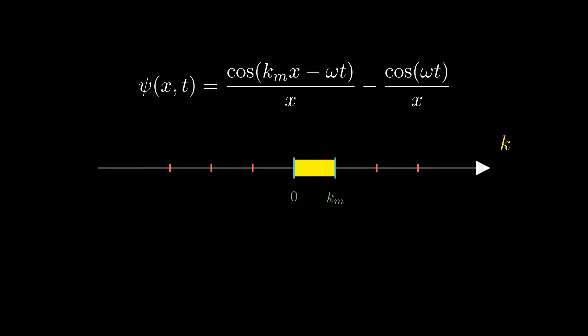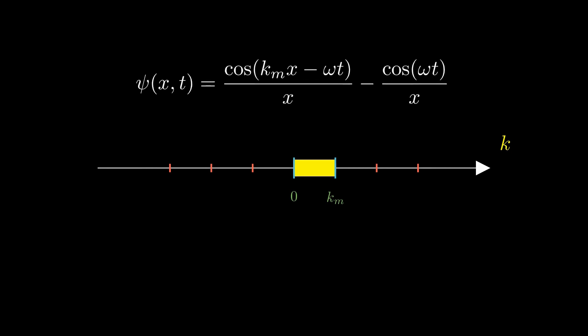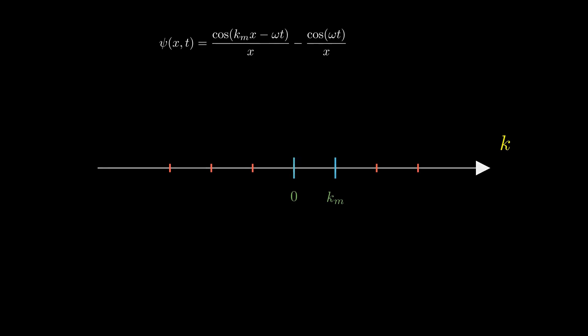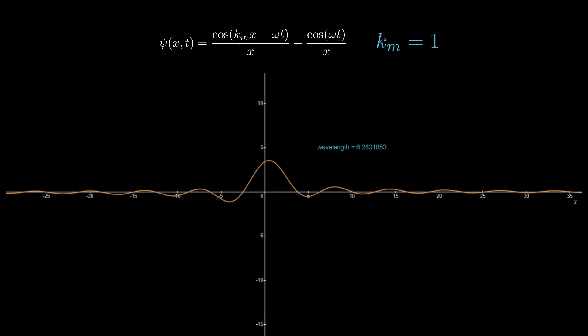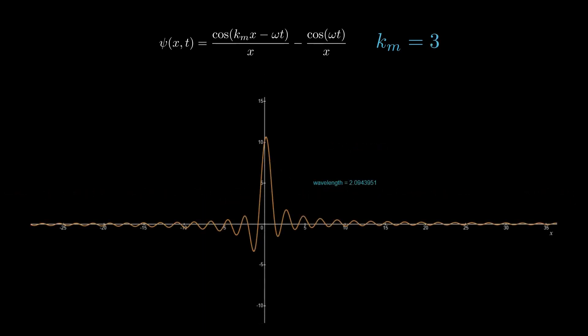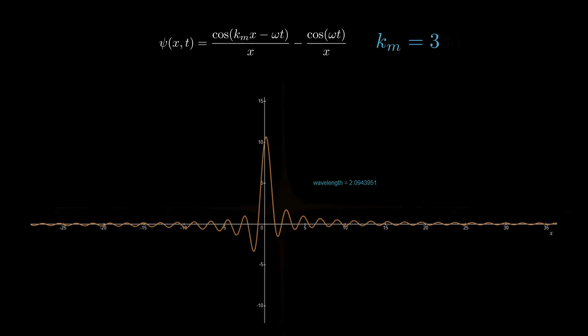Now notice that k sub m represents the range width of the k values taken into integration. If we take, for example, the value of k sub m equals 1, meaning that we include all values of k from 0 to 1, we get the following figure. Let's expand the k range even more. Let's take k sub m equals 3. Notice that the pattern becomes narrower. What if we take the value k sub m equals 100? The pattern becomes narrower still.